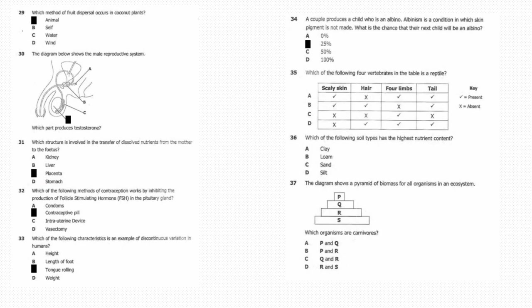Thirty-five: Which of the following four vertebrates in the table is a reptile? The answer is A. Thirty-six: Which of the following soil types has the greatest nutrient content? Answer is B, loam soil. Thirty-seven: The diagram shows a pyramid of biomass for all organisms in an ecosystem. Which organisms are carnivorous? Answer is A, T and Q.